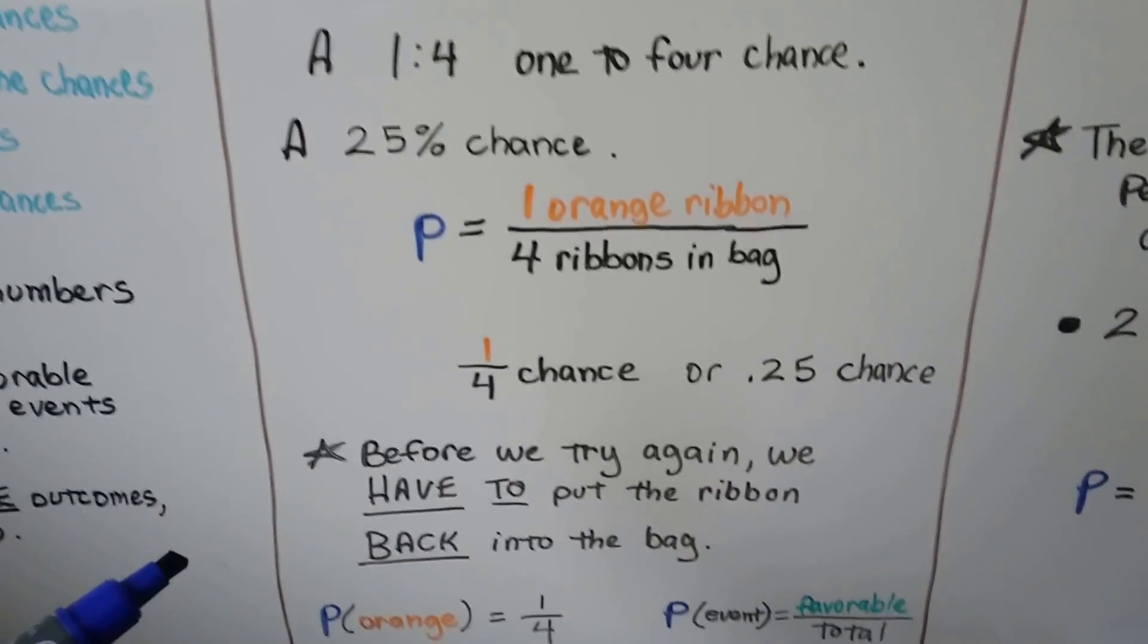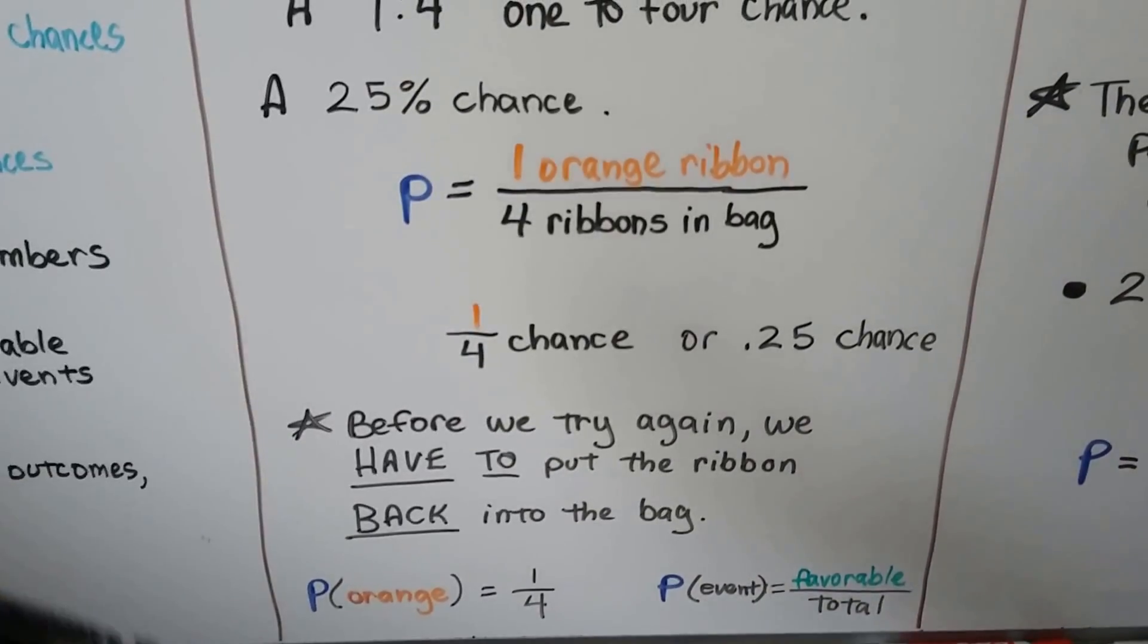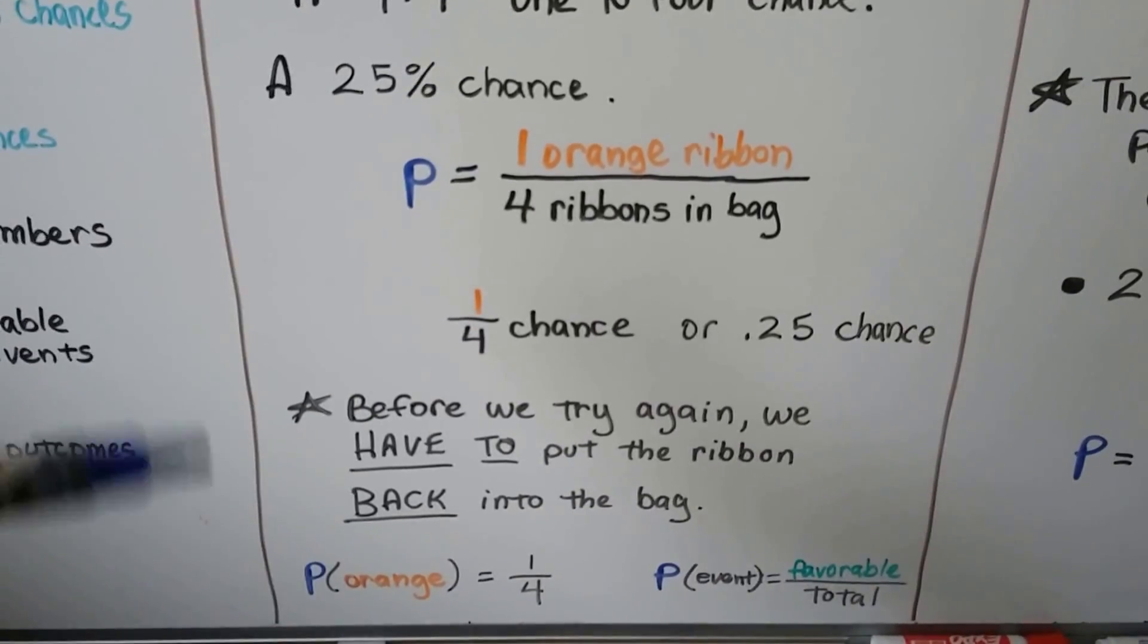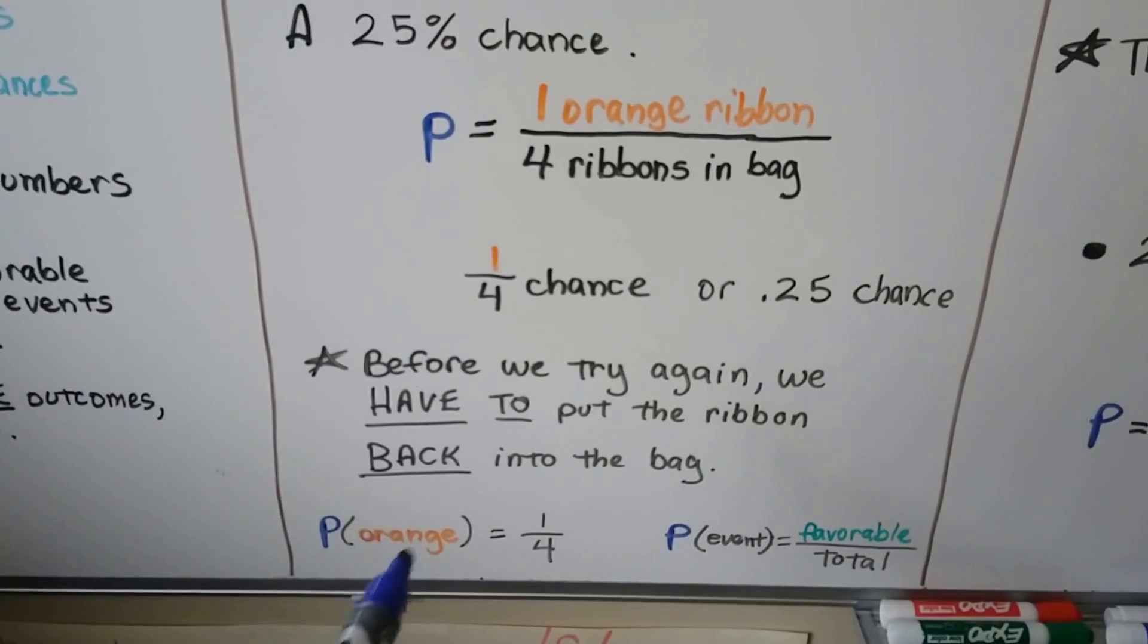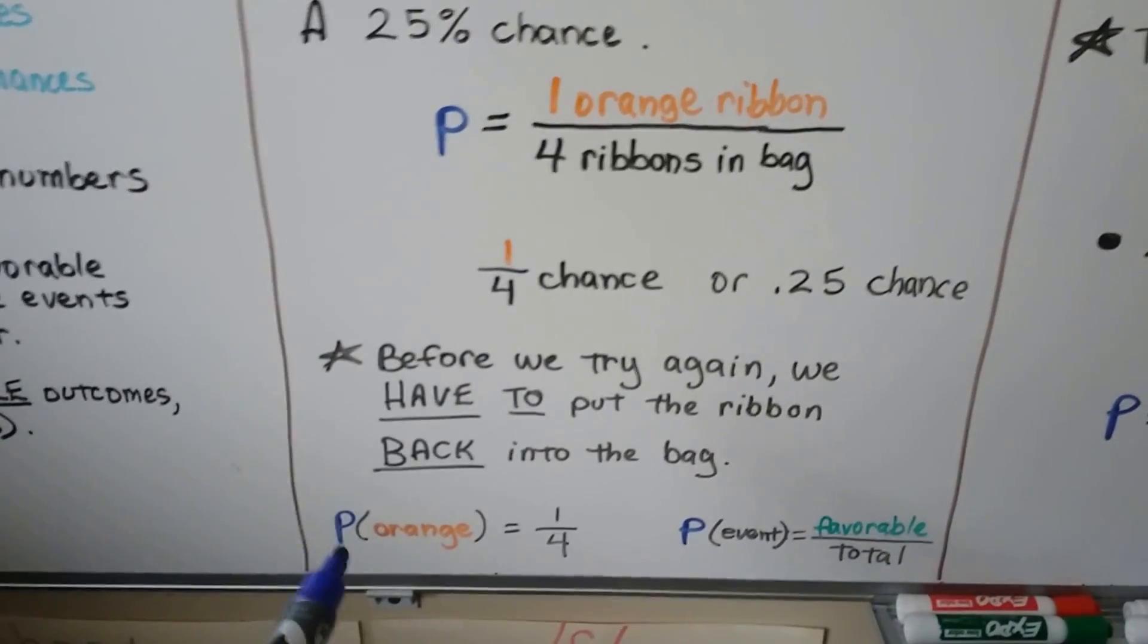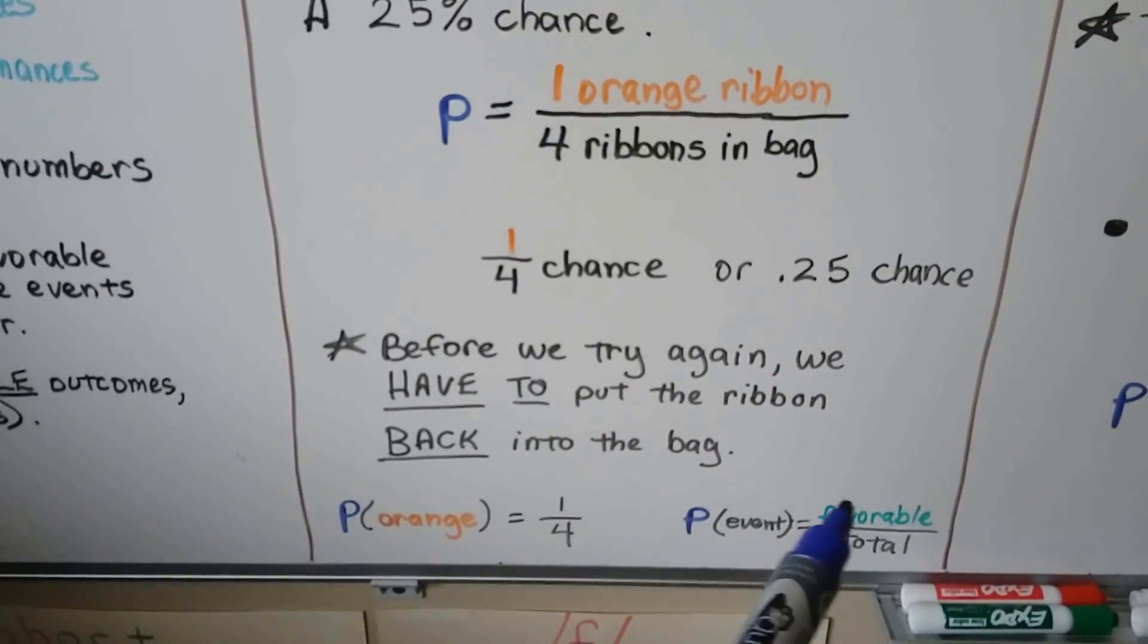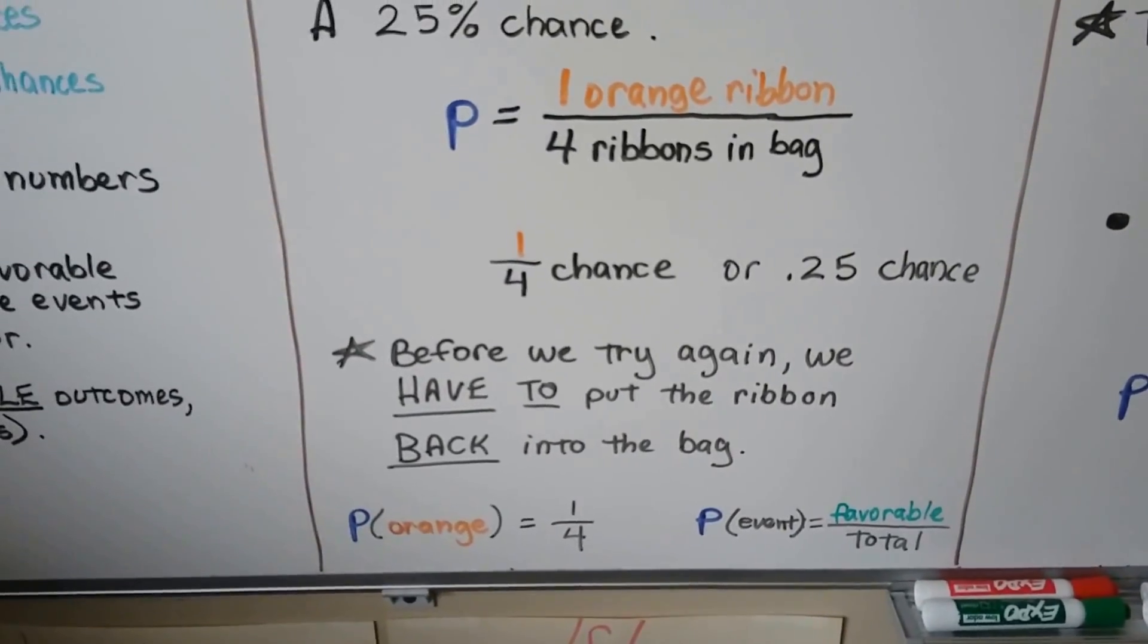Now, if we wanted to try again, we'd have to put that orange ribbon back into the bag and then stick our hand back in and try to pick another color to see if we get orange again. And the way they write it is they write the event here, the thing we're trying to get. So it would be P and then orange in parentheses. It's the probability of the event would be one to four or one-fourth. It's the favorable outcome over the total possible outcomes.